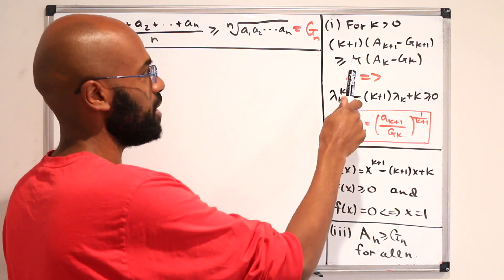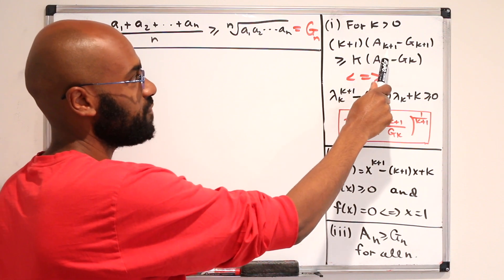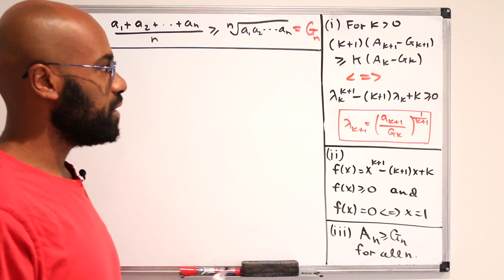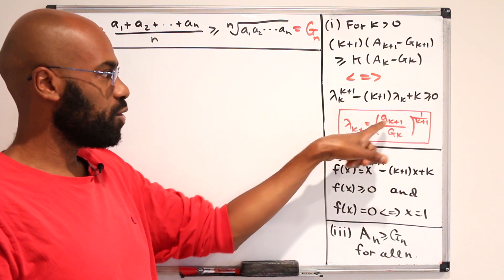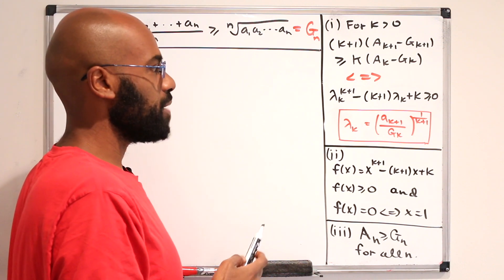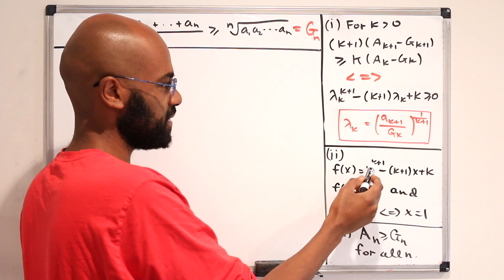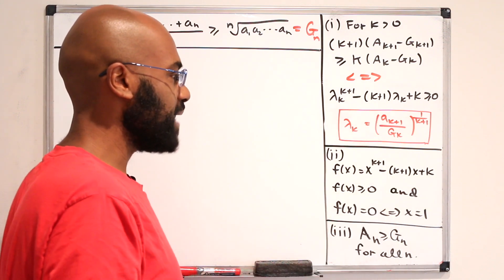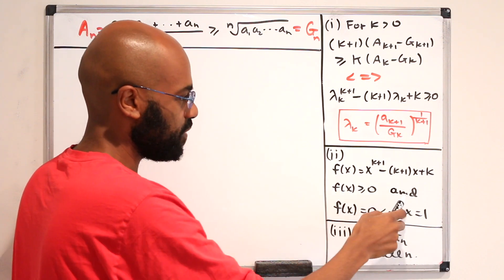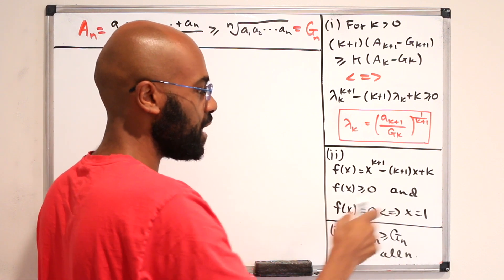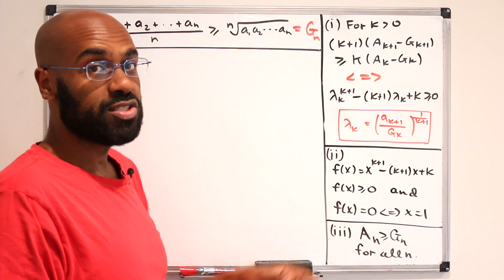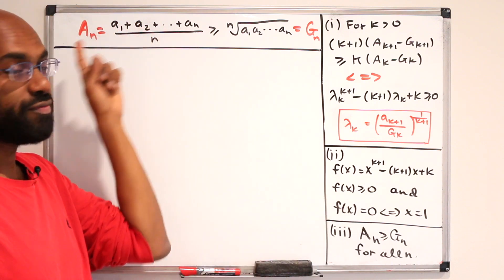The first step is to make a relationship between the following expressions: that k+1 times the difference of the (k+1)th iterate of the arithmetic mean and geometric mean is greater than k times the kth iterate of that, if and only if you have this inequality satisfied by the quantity relating the (k+1)th element of the sequence to the kth geometric mean. You can think about this as plugging lambda k into the function f(x) = x^(k+1) - (k+1)x + k, and establishing that function is non-negative. The function is zero only when x equals 1, and you can use that to show equality holds if and only if all entries of your sequence are equal.